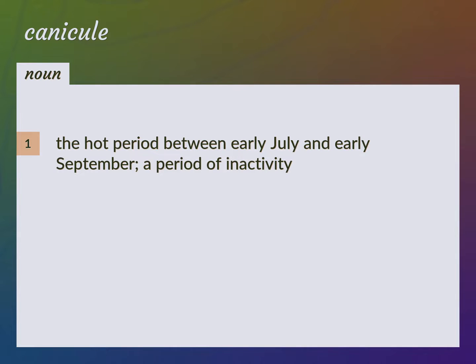The hot period between early July and early September, a period of inactivity. Canicular days — dog days.